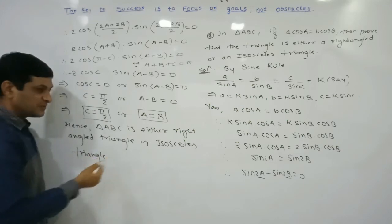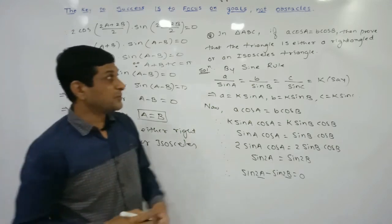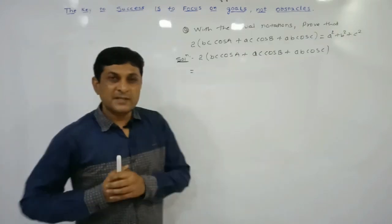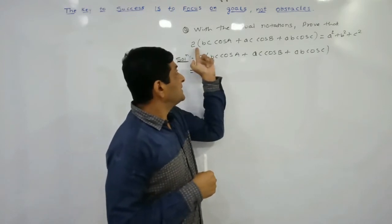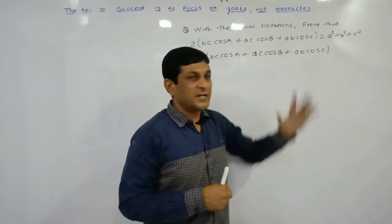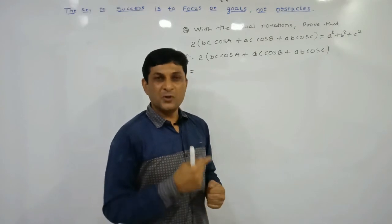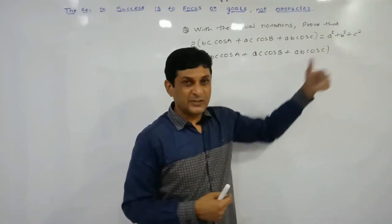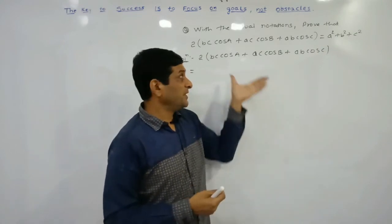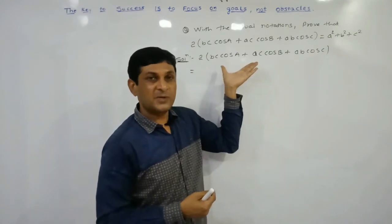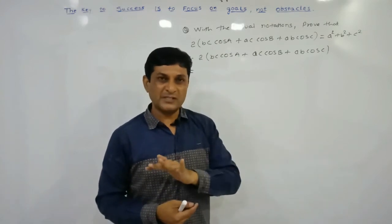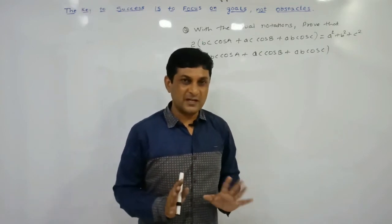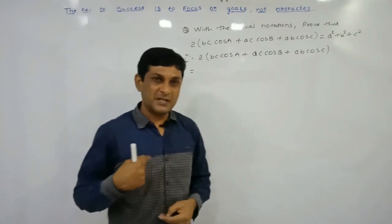Hence triangle ABC is either a right-angle triangle or an isosceles triangle. This completes Example 8. Now see Example 9. Here we have to show that the left-hand side equals the right-hand side. Observing the right-hand side carefully, small a, small b, small c appear, so we will simplify the left-hand side and convert it in terms of a, b, c.